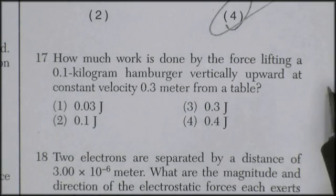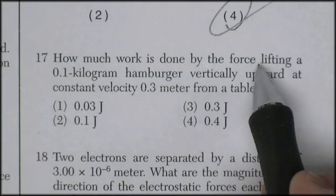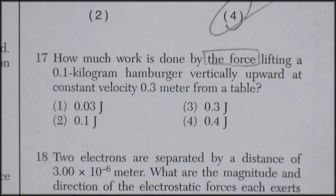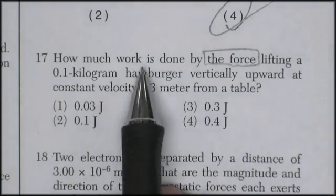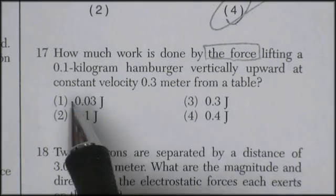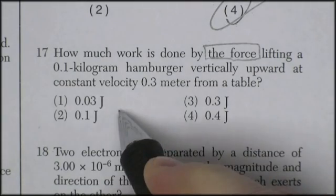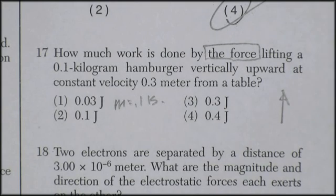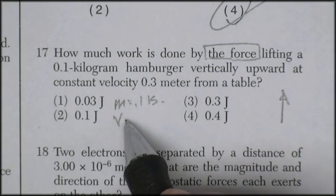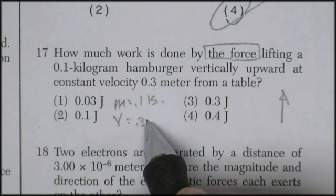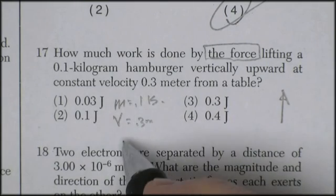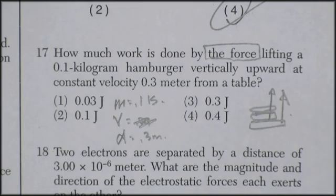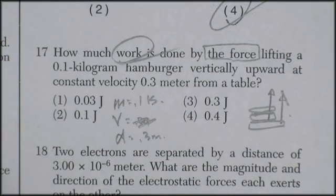Question 17. How much work is done by the force lifting by the force? The force. I just had this picture of the Star Wars. Trust the force, Luke. How much work is done by the force lifting a 0.1 kilogram hamburger? So here's a mass of 0.1 kilograms vertically upwards at a constant velocity of 0.3 meters. A constant velocity. Okay, so it listed a distance 0.3 meters at a constant velocity. All right, well we're looking for work.